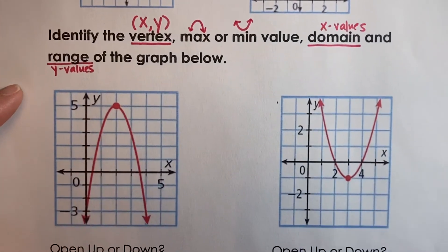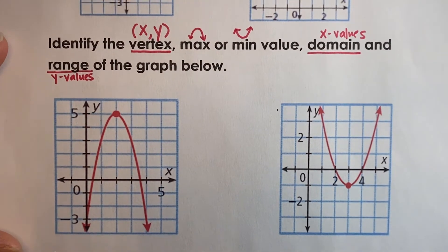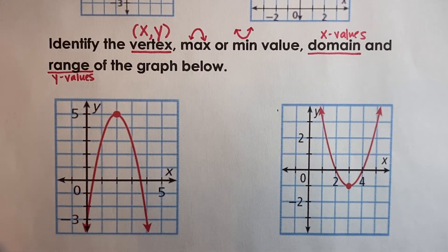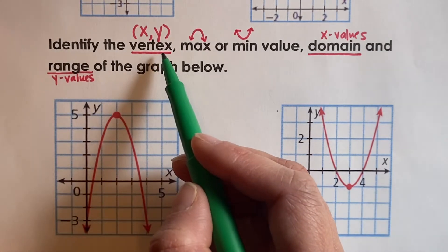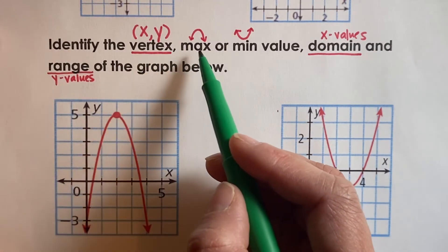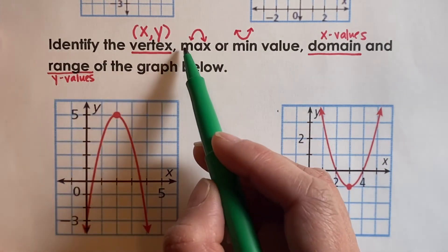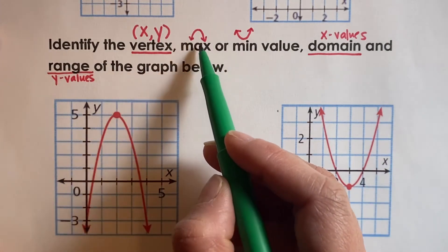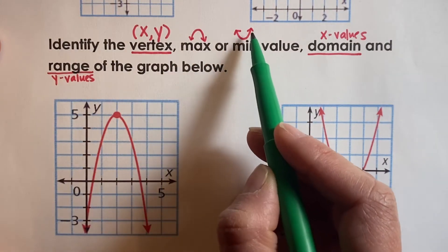Now we're going to learn how to identify the vertex, max or min value, and domain and range of a graph. The vertex is written as a point and it's the highest or lowest point in your graph. Your maximum or minimum value is the y value from your vertex. If it's a maximum, your graph is facing down. If it's a minimum, your graph is facing up.